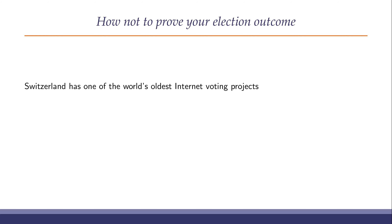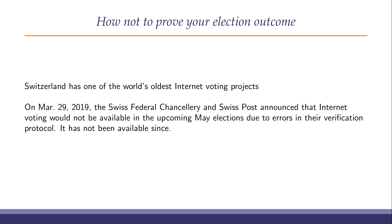Our story concerns the Swiss electronic internet voting system, one of the world's oldest internet voting projects, and specifically the discoveries we made when the source code was made available when a particular system was trying to get certification for use by 100% of voters in the cantons that decided to use it. On March 29, 2019, the Swiss Federal Chancellery and Swiss Post announced that internet voting would not be available in the upcoming May elections due to errors in the verification protocol discovered in the context of the open evaluation process. It hasn't been available since. This is the story of why.